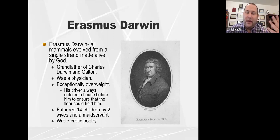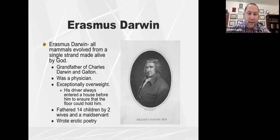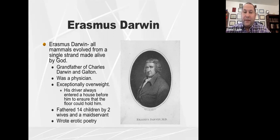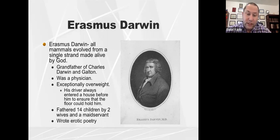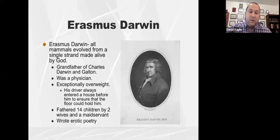Discussions of evolution were happening even before Charles Darwin. Erasmus Darwin was a physician and was exceptionally overweight — he would have his driver enter a home first to see if it could hold him. In terms of passing on lineage, Erasmus Darwin fathered 14 children from two wives and a maidservant, and wrote erotic poetry.